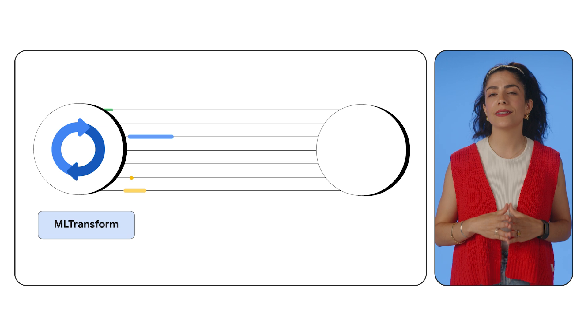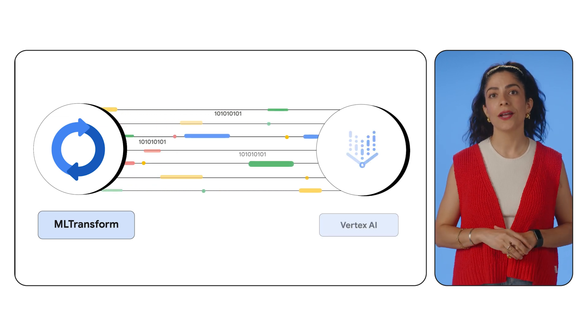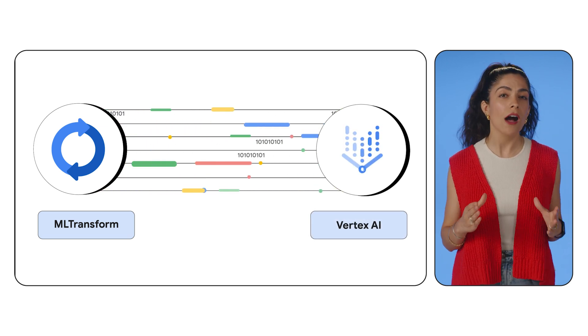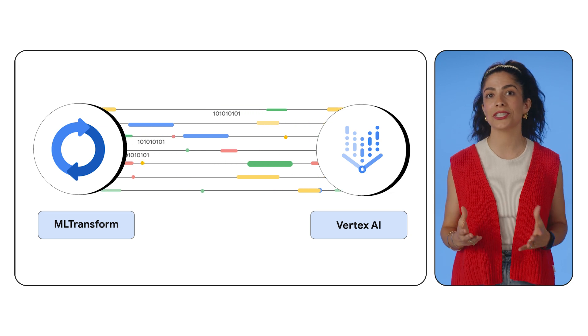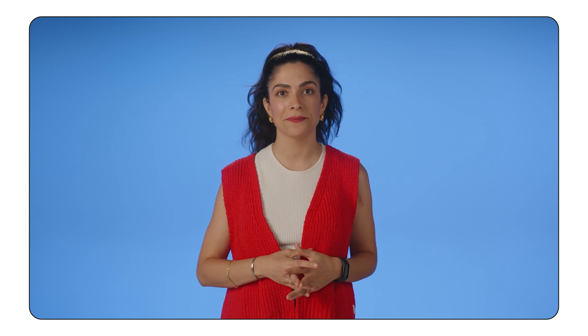Dataflow also makes it incredibly easy to incorporate AI and ML, with pre-built transforms for common ML tasks and integration with Vertex AI. Further, Dataflow excels at handling spiky workloads, which are common in IoT scenarios where data volumes can fluctuate dramatically. Its auto-scaling capabilities automatically adjust to match demand. Let's take a look at a sample architecture.